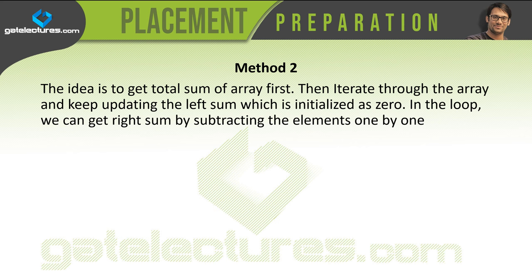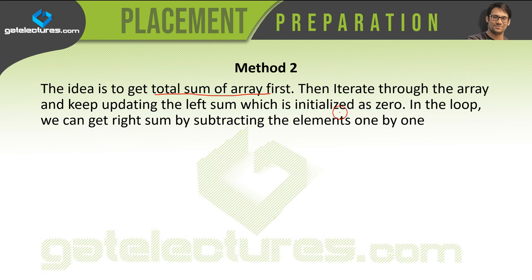Now what is the second solution? The idea is to get the total sum of an array first, and then iterate through the array keeping and updating the left sum which is initialized to zero. In the loop we can get the right sum by subtracting the elements one by one.